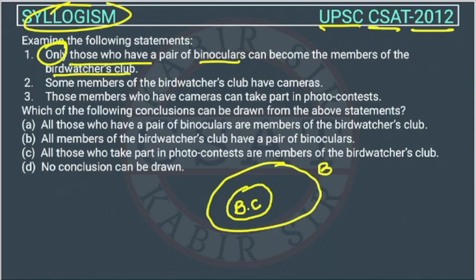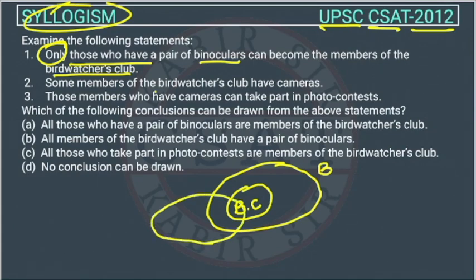The second statement: some members of the bird watchers club have a camera. So in the Venn diagram, some members of the bird watchers club are shown as having a camera.